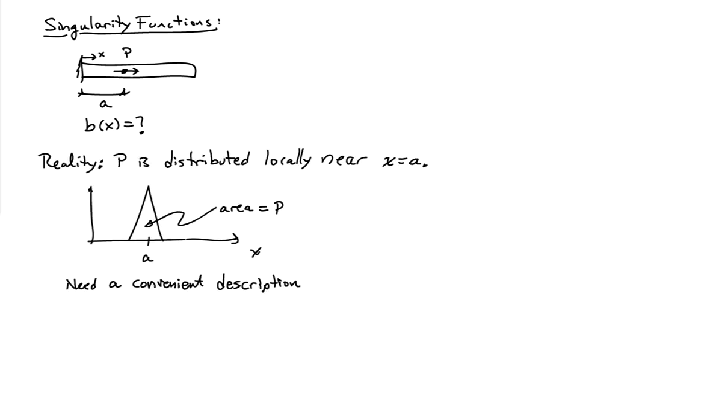Now, the reality is that a point force is an idealization, so it's really a distributed load that's distributed locally near x equals a. So we have some kind of distributed load, B of x, and it takes non-zero values for values of x that are very close to a, and the area underneath this curve here has to equal p. So that's what we have in reality, some kind of locally concentrated distributed load. And without knowing the details of that distribution, we'd still like to have a convenient description for this type of loading.